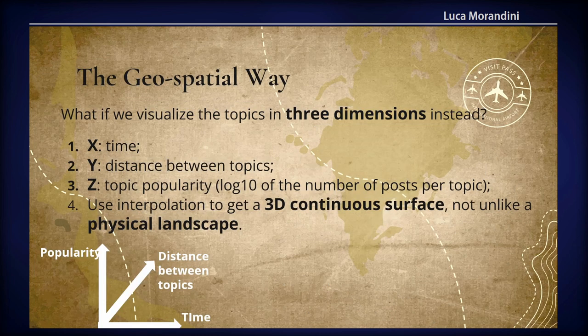So we thought about doing something different, using a spatial metaphor. On the x-axis, you have time. On the y-axis, you have the semantic distance between topics — so a topic on the Russian-Ukrainian war will be closer to a topic on the Ukrainian economy than to one on the US economy. On the z-axis, you have topic popularity: the number of social media posts for that topic for that day. You then have a point cloud, basically.